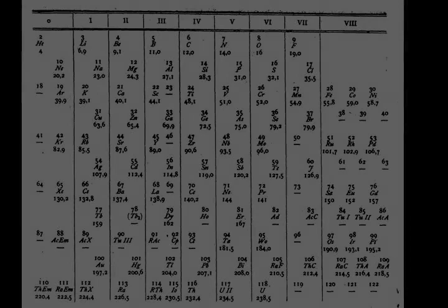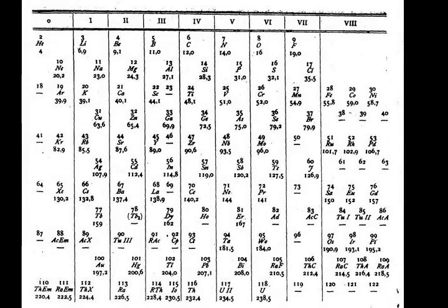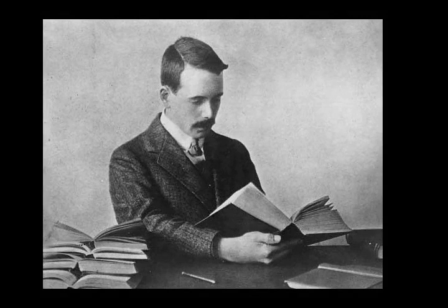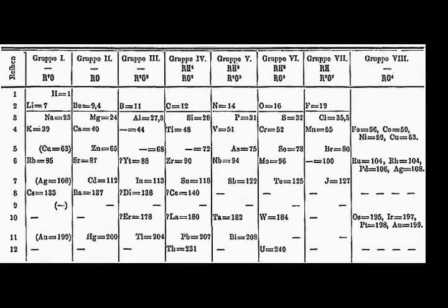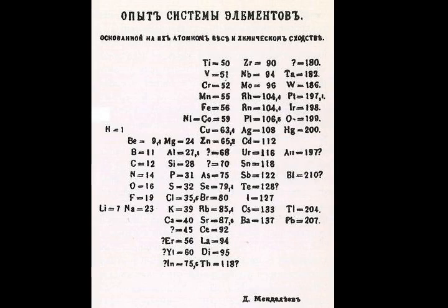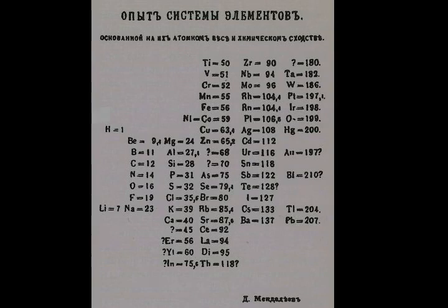Under an international naming convention, the groups are numbered numerically from 1 to 18 from the leftmost column to the rightmost column; the f-block groups are ignored in this numbering. Previously, groups were known by Roman numerals. In America, the Roman numerals were followed by either A if the group was in the s or p block, or B if the group was in the d block. In Europe, the lettering was similar, except that A was used if the group was before group 10, and B for groups including and after group 10. Groups 8, 9, and 10 used to be treated as one triple-sized group. In 1988, the new IUPAC naming system was put into use and the old group names were deprecated.